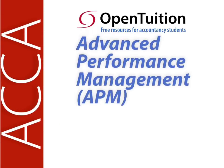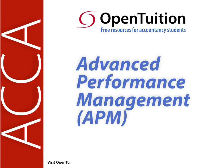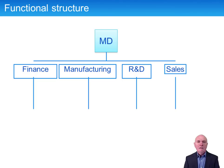This is a lecture from Open Tuition. To benefit from the lecture, you should download the free lecture notes from opentuition.com. Chapter 5 deals with the structure of businesses, business change, the value chain, and the McKinsey 7S model.